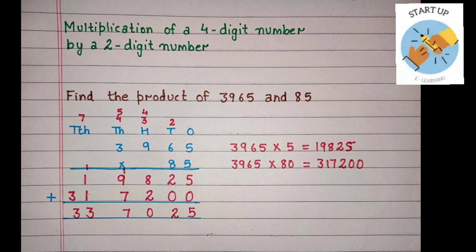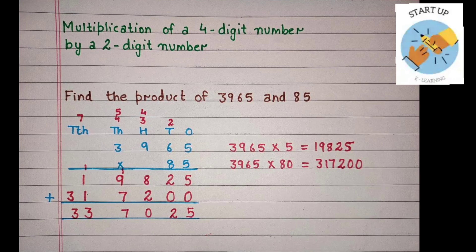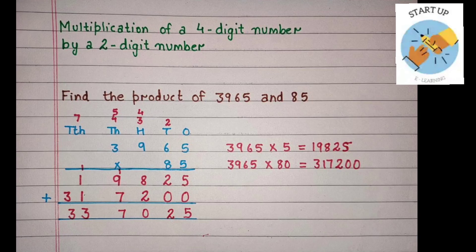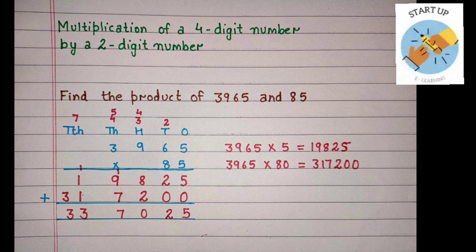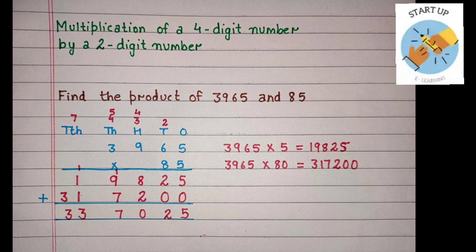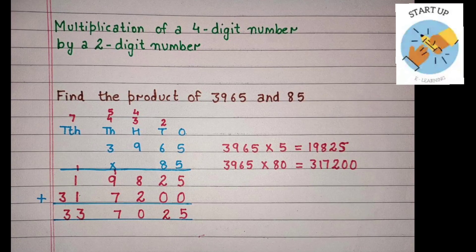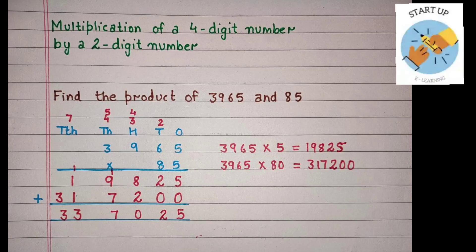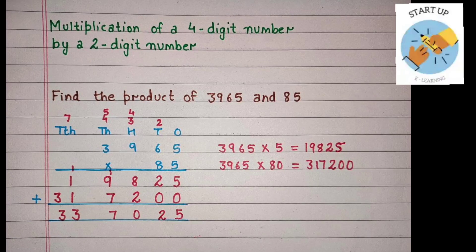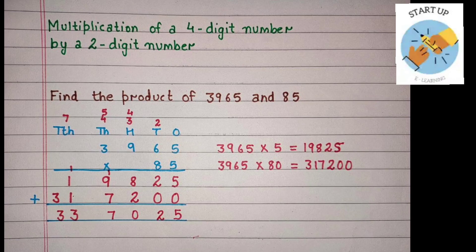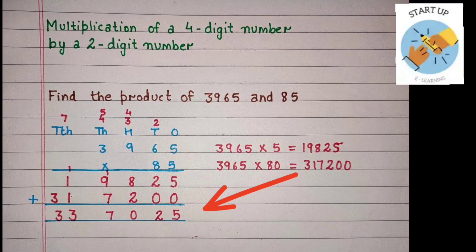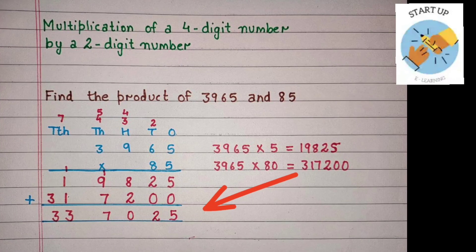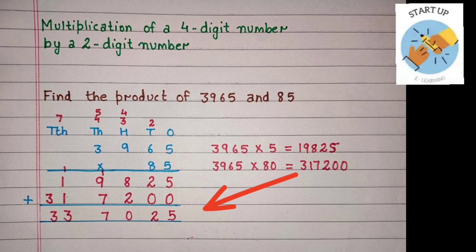To get the final product, we will add these two partial products together. Let's start from the 1's place. 5 plus 0 equals 5. 2 plus 0 equals 2. 8 plus 2 equals 10 — 0 is written and 1 is carried. 9 plus 7 equals 16, plus 1 carried equals 17 — 7 is written and 1 is carried to the 10,000's place. 1 plus 1 plus 1 carried equals 3. 3 plus nothing equals 3. By adding the two partial products, we get the final product: 3,965 multiplied by 85 equals 3,37,025.